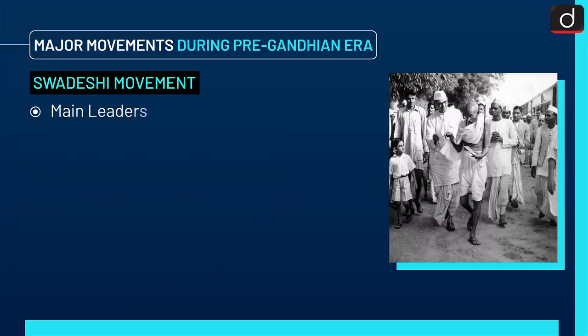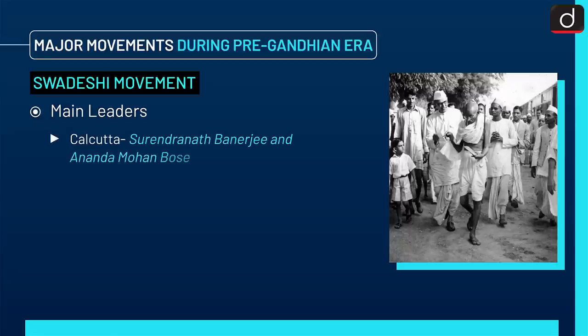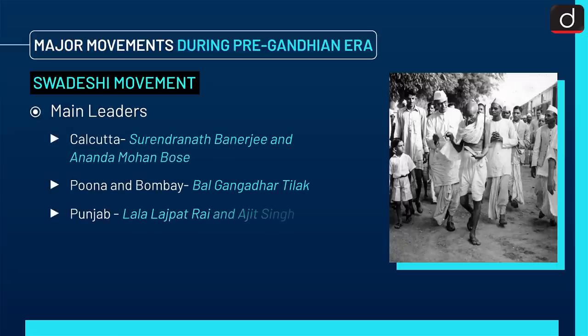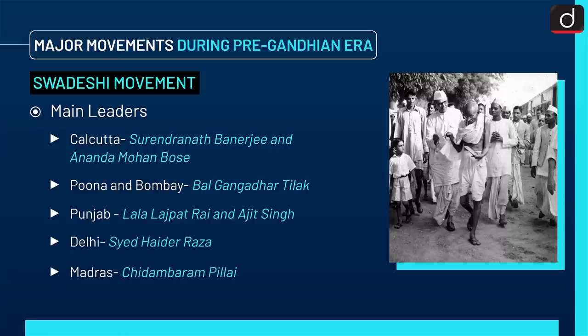The main leaders of this movement were: from Calcutta, Surendranath Banerjee and Anand Mohan Bose; from Pune and Bombay, Bal Gangadhar Tilak; from Punjab, Lala Lajpat Rai and Ajit Singh; from Delhi, Sayyid Haider Raza; and from Madras, Chidambaram Pillai.